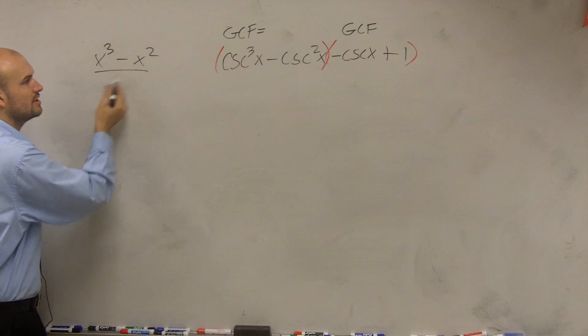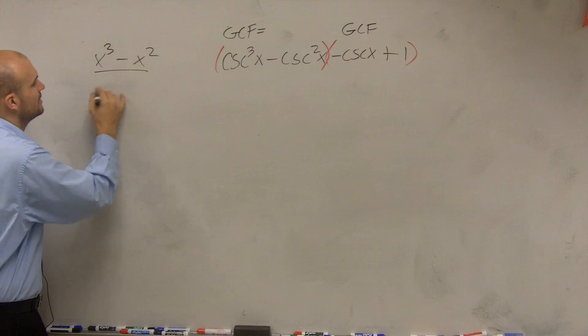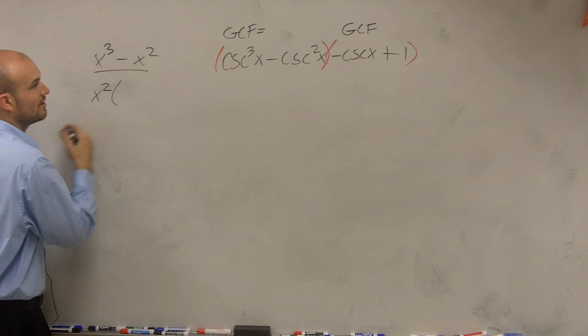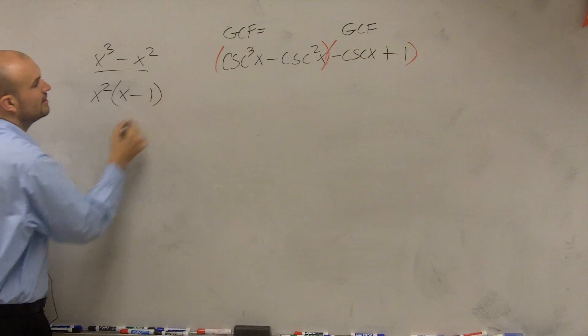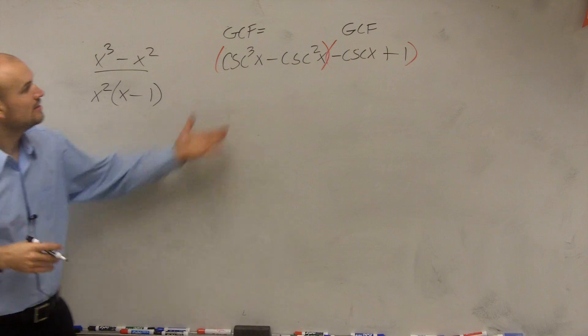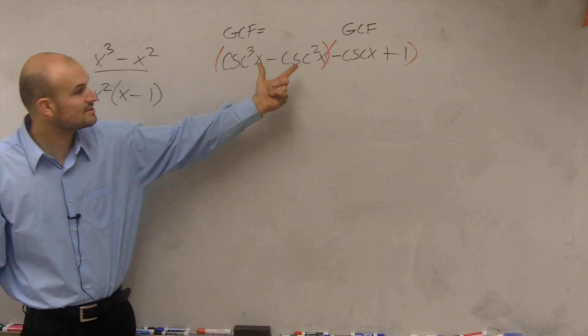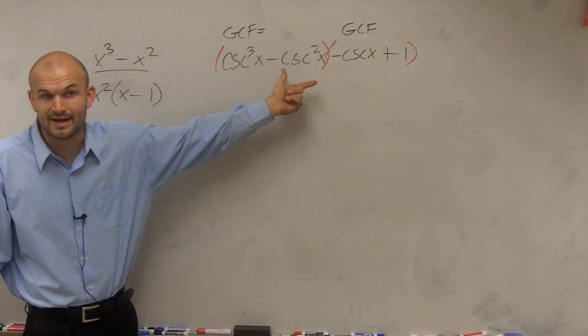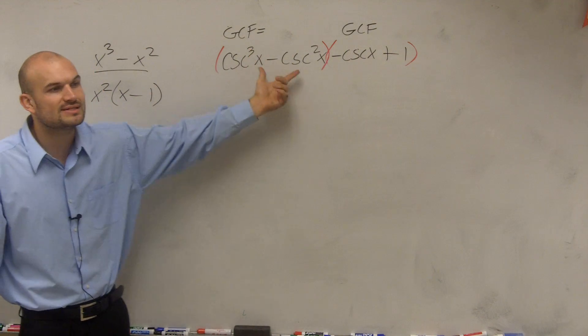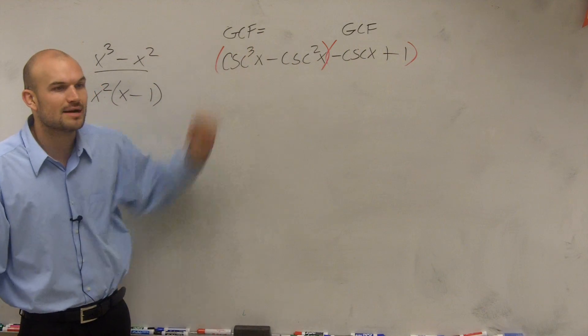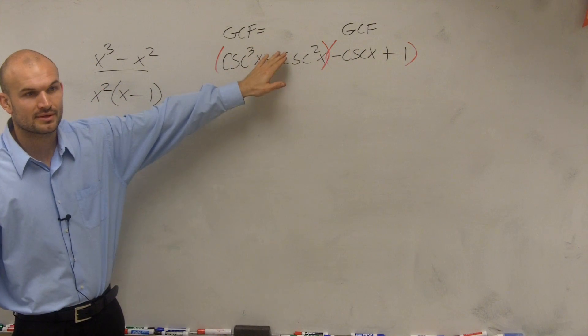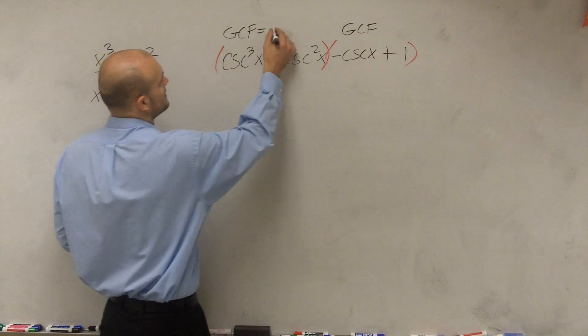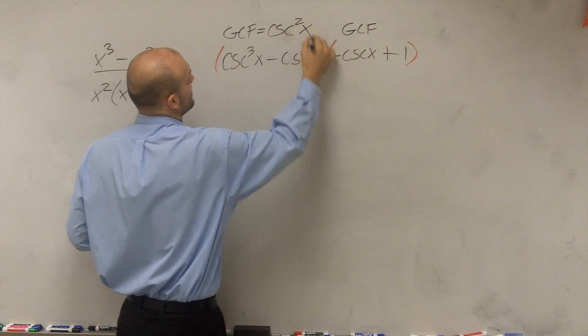you could say that the GCF is this one right here. The GCF of this is the greatest term that factors into both of them would be x². So that would leave me with (x - 1) when you factor it out. But here, we don't have x³ in it. We also have the cosecant. However, all I'm doing is adding the cosecant. So what do you think the greatest common factor of these two terms would be?